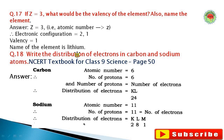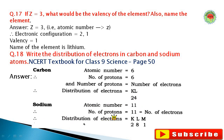Question number eighteen: Write the electron distribution of carbon and sodium. For carbon, atomic number 6: protons = 6, electrons = 6, distribution is first shell 2, second shell 4. For sodium, atomic number 11: protons = 11, electrons = 11, distribution is K shell 2, L shell 8, M shell 1.